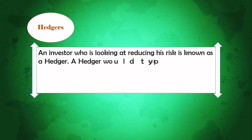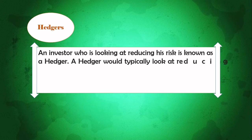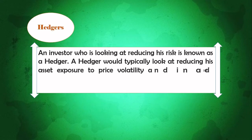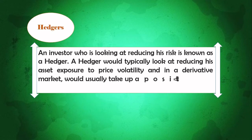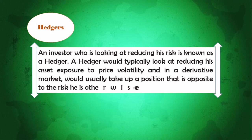An investor who is looking at reducing his risk is known as a hedger. A hedger would typically look at reducing his asset exposure to price volatility, and in a derivative market would usually take up a position that is opposite to the risk he is otherwise exposed to.